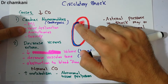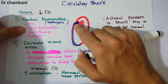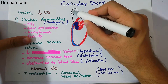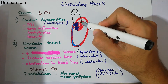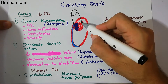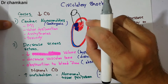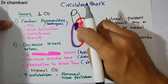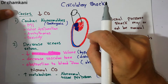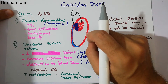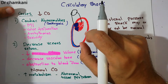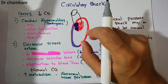The heart receives deoxygenated blood from the body, sends it to the lungs where it gets oxygenated, and then returns it to the heart. The oxygenated blood is then pumped by the heart to the body. Any condition that leads to inadequate blood flow to such an extent that body tissues are damaged due to little supply of nutrients like oxygen constitutes circulatory shock.